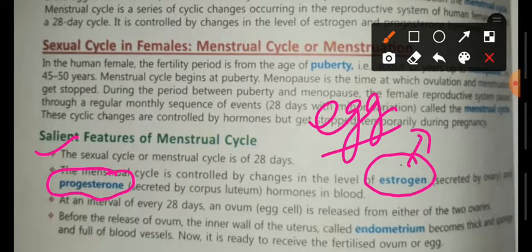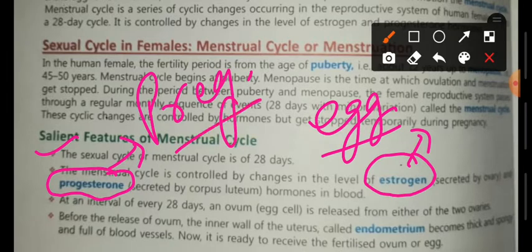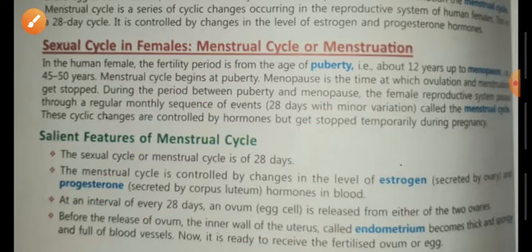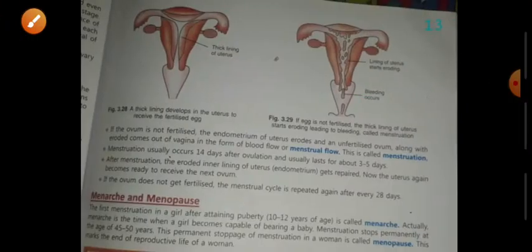What is progesterone? This cycle involves left and right ovaries. It is very rare that both ovaries become mature at the same time.